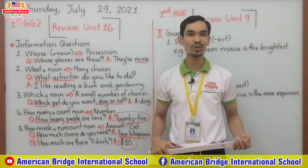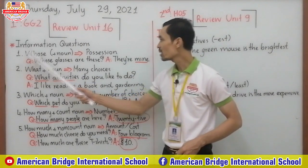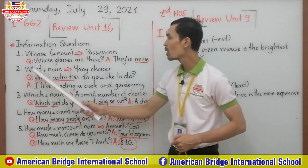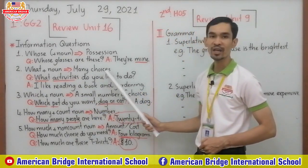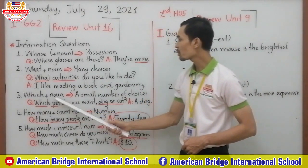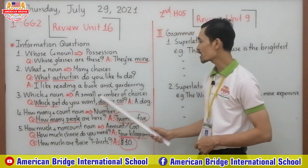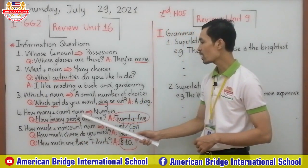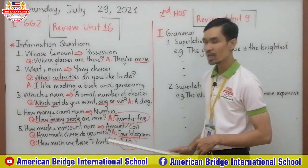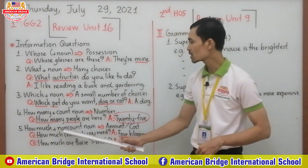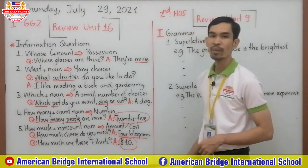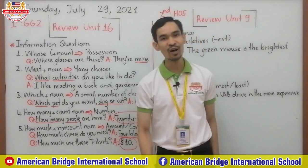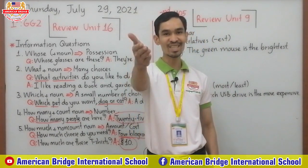One: whose plus noun — to show possession. Two: what plus noun — to show many choices. Three: which plus noun — to show a small number of choices. Four: how many plus count noun — to show number. Five: how much plus non-count noun — to show amount, and how much without a noun — to show cost. We have now finished our first session. See you in the second session.